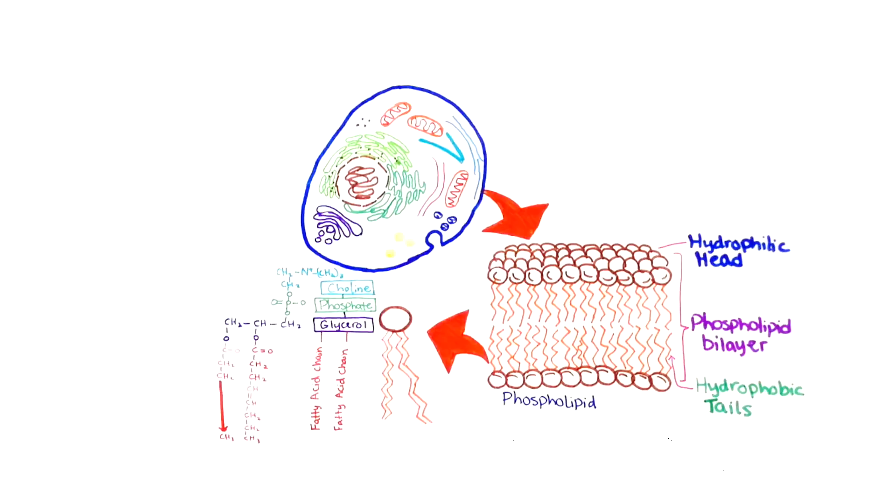However, fatty acid chains may have carbon-carbon double bonds, which adds a kink in the structure of the chain, hence they don't pack as tightly. These unsaturated fatty acids are liquid at room temperature and are therefore known as oils.